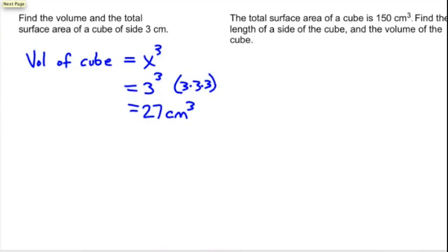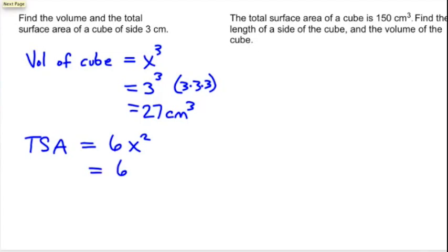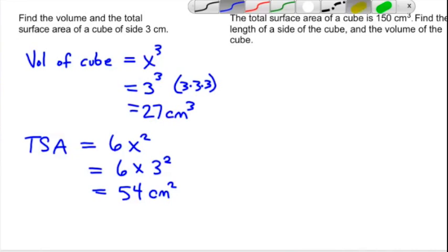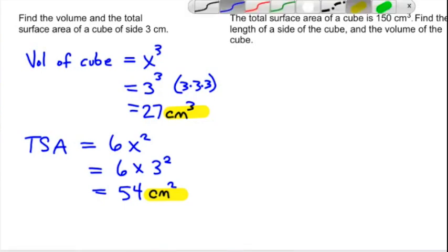Next, we're going to find the total surface area. We know the total surface area, TSA, is going to be 6X squared. So that means we have 6 times 3 squared, which is 6 times 9, which gives us 54 centimeters squared. Notice the units here — a lot of us forget them. Over here we'll notice cubic centimeters for volume and centimeters squared for surface area.